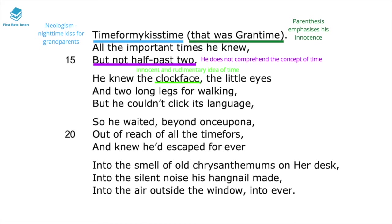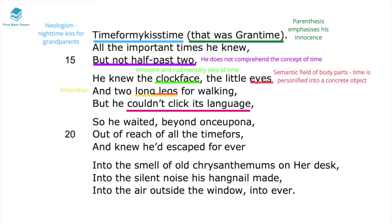The child 'knew the clock face,' showing a very innocent and rudimentary idea of time — they don't have a concrete idea of something so abstract. As they think about the clock, it has 'little eyes' and 'long legs,' so the semantic field of body parts shows time being personified into a concrete object. The alliteration of 'long legs' emphasises the child's innocence, and 'he couldn't click its language' shows time is really alien to this boy — a different form of communication.